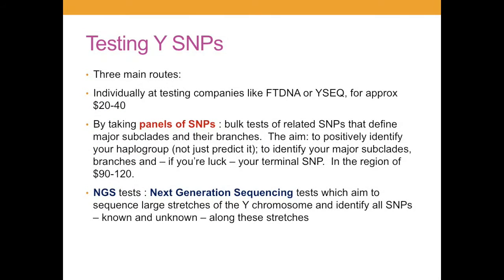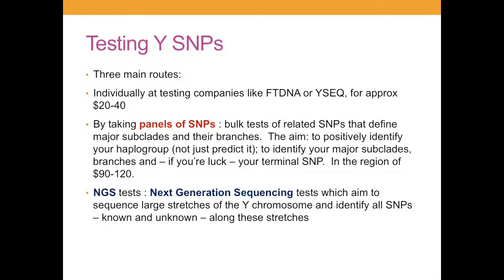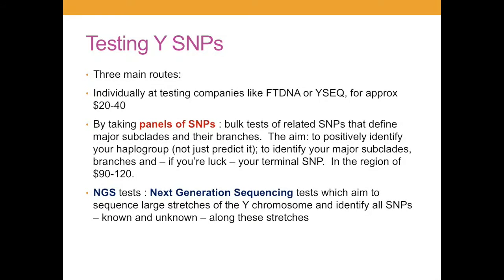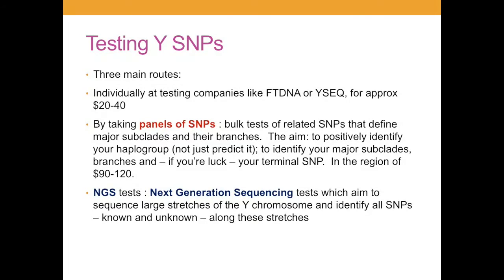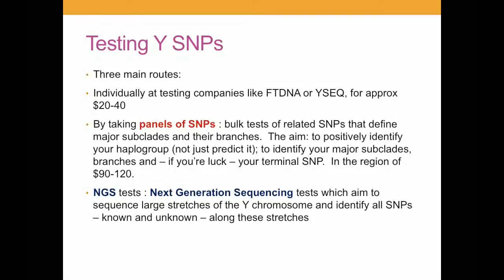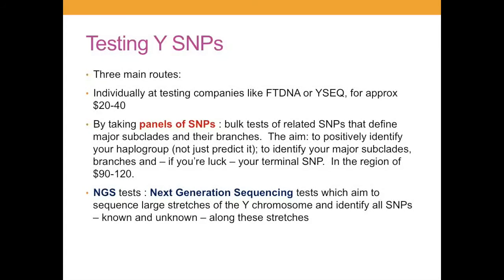There are a number of ways of testing SNPs, and this summer we've seen a huge increase in one of those — the growth in panels of SNPs. Previously there were individual SNP tests, which can still be done at companies like FamilyTreeDNA and YSeq, and they're very inexpensive — as little as $20, as much as $40 per SNP. But the panels of SNPs are now putting together huge collections, usually related to a particular subclade, so if you wish to investigate your subclade you can order a panel for anything from $90 to $120, again from the same two companies.